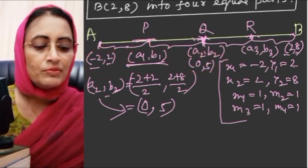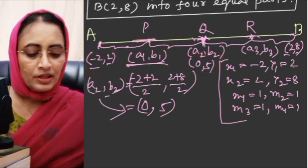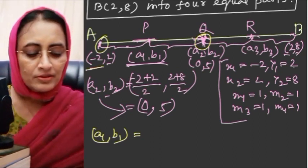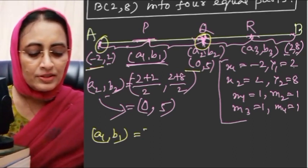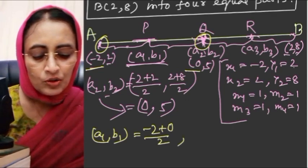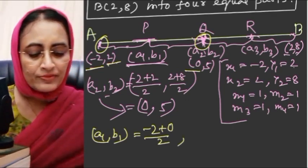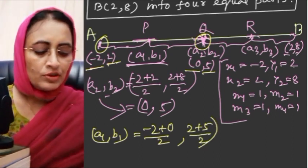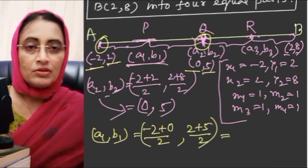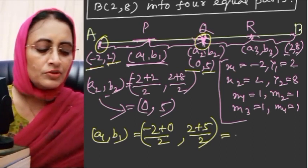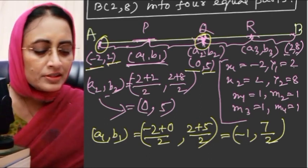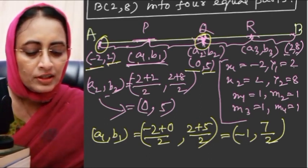Now using the midpoint formula again to find P. P is the midpoint of A(-2, 2) and Q(0, 5). So P = ((-2 + 0)/2, (2 + 5)/2) = (-2/2, 7/2) = (-1, 7/2).